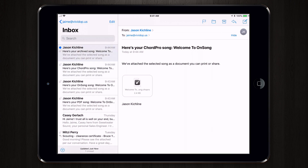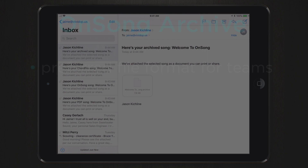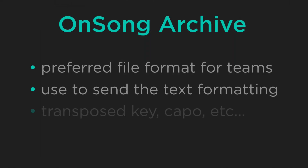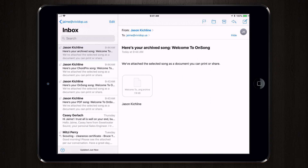Lastly, I've sent an archived song or an OnSong archive file format. This file format is what you should use if you want to send the text formatting, the transpose key, capo, and all those settings just the way you have them. And if you're sending a set, make sure you have the single file option turned on, and that will send one file that your bandmates can simply open.